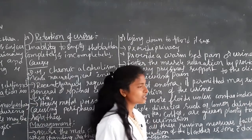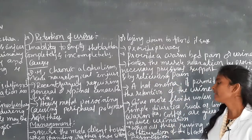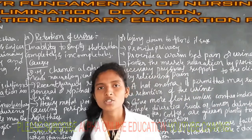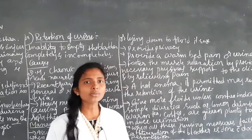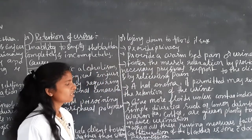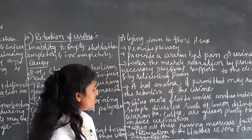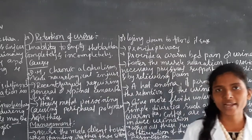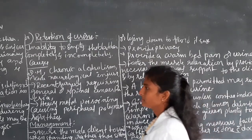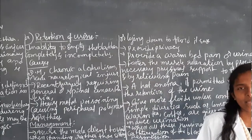When all these nursing measures fail, they have to take permission from the physician for catheterization. According to the physician's order, they have to provide catheterization of the bladder. The catheterization of the bladder is done only with the doctor's permission.